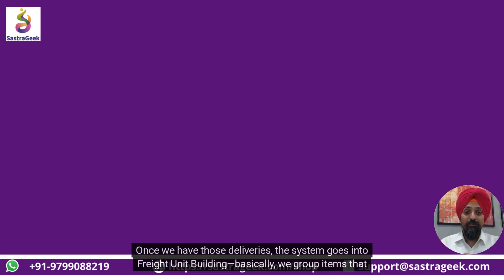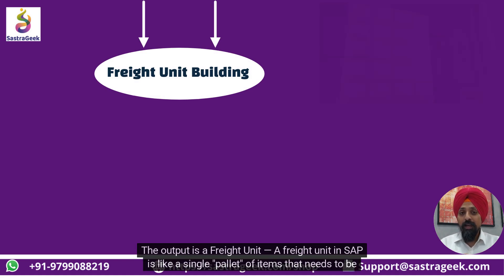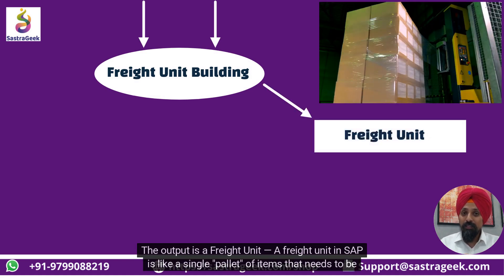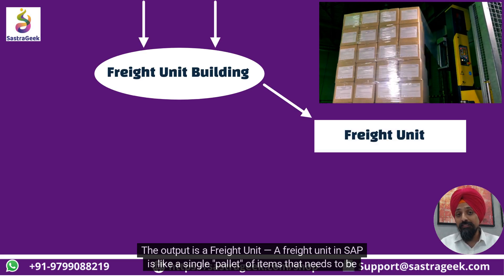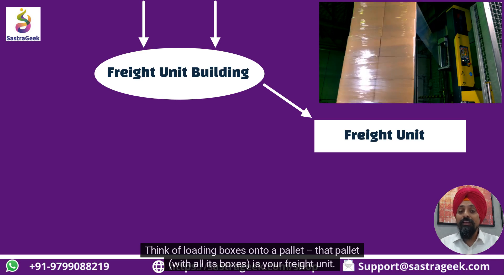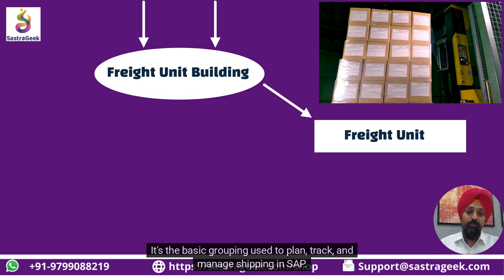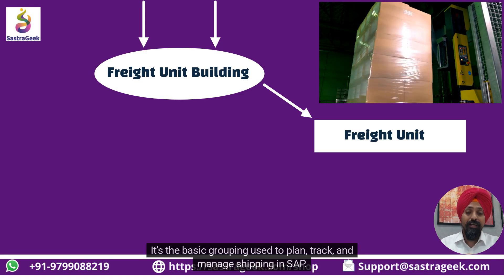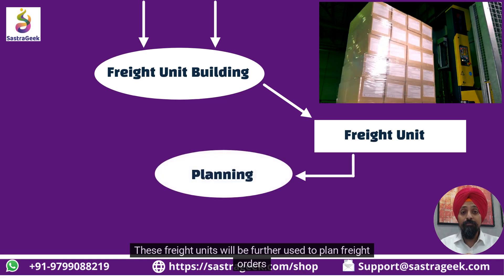Once we have those deliveries, the system goes into freight unit building. Basically we group items that will be shipped together, and the output is a freight unit. A freight unit in SAP is like a single pallet of items that needs to be shipped — think of loading boxes onto a pallet. That pallet, with all its boxes, is your freight unit. It's the basic grouping used to plan, track, and manage shipping in SAP. These freight units will be further used to plan freight orders.